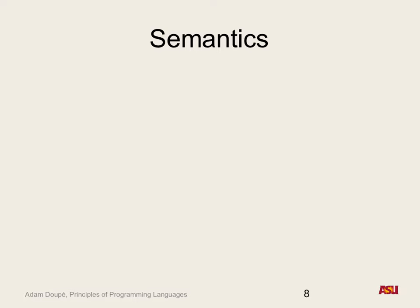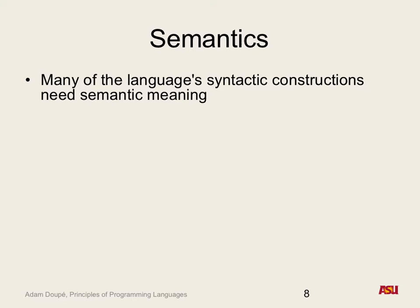So we talked about three different ways of actually defining semantics: English documentation, a reference implementation, and formal math. You can think of this two ways — you want to learn a new programming language, or you want to describe your new programming language. What types of language features do you need to describe so that somebody else can write a compiler for it, or use it and write programs in that language?